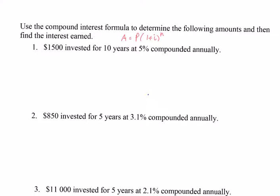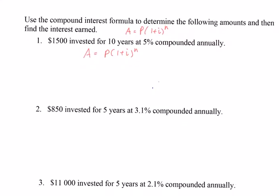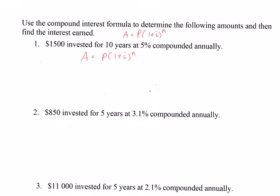Every time I do these problems, I always write the acronym A-P-I-N, which represents all the variables in our equation. So: A is the future amount, P is our starting value, I is the interest rate, and N is the number of periods. In this case, P is our starting value.